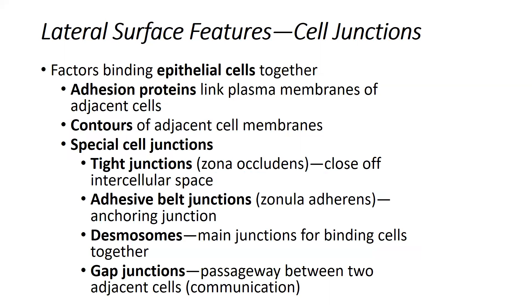The second factor that helps to keep two cells together are the contours of the adjacent cell membrane. When I say contours, this means that one cell sort of sits very nicely in the grooves or the contours of the adjacent cell — like a twist or a contour in that cell membrane — allowing two adjacent cells to sit next to each other, similar to the way that two pieces of a puzzle fit together.